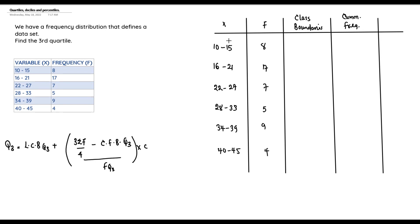To get the class boundaries, for each class we subtract 0.5 from the lower class limit and add 0.5 to the upper class limit. So for the first class 10–15: 10 − 0.5 = 9.5 and 15 + 0.5 = 15.5. For the next class 16–21: 16 − 0.5 = 15.5 and 21 + 0.5 = 21.5.